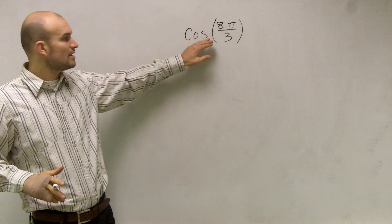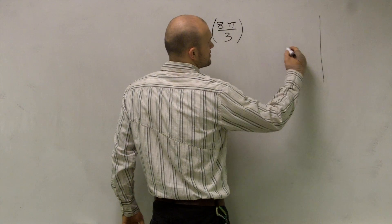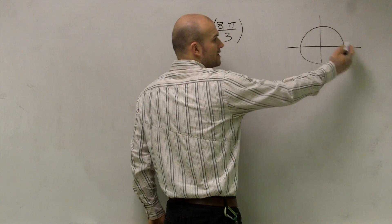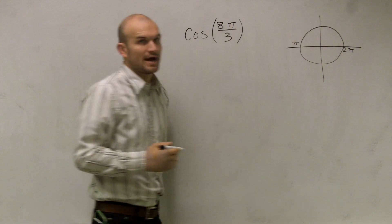Now if it says just to evaluate cosine of 8π over 3, what we notice is when we're taking the unit circle, if we start here, here would be π, and here's going to be 2π.